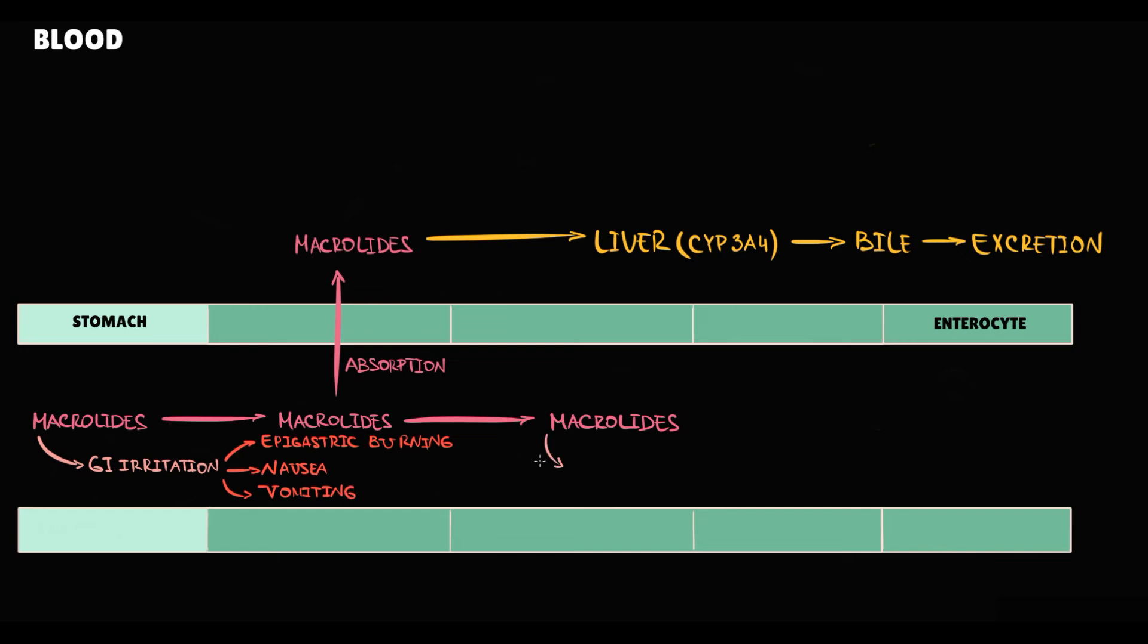In intestine, macrolides stimulate motilin receptor, that significantly increases intestinal motility. And this results in high risk of diarrhea and abdominal pain.